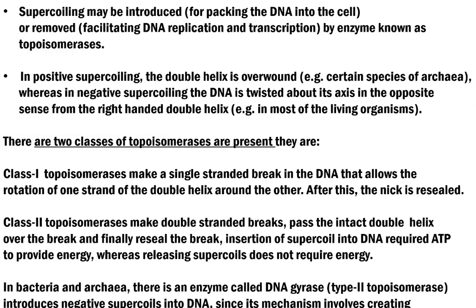These processes are effected through gyrases and topoisomerases. There are two types of supercoiling: one is positive supercoiling and another is negative supercoiling. In positive supercoiling, the double helix is overwound on itself — this commonly happens in certain species of archaea. Whereas in negative supercoiling, the DNA is twisted about its axis in an opposite sense to that of the right-handed double helix. This is the common form of supercoiling found in most living organisms.